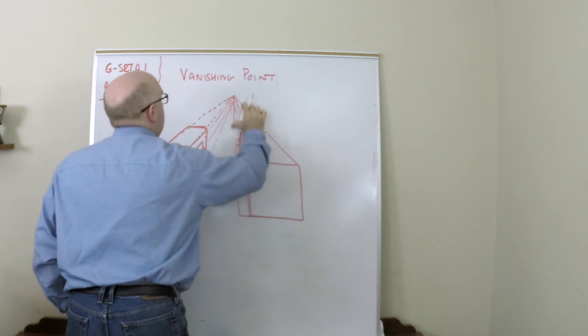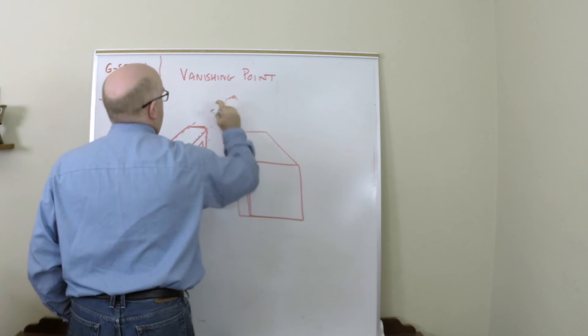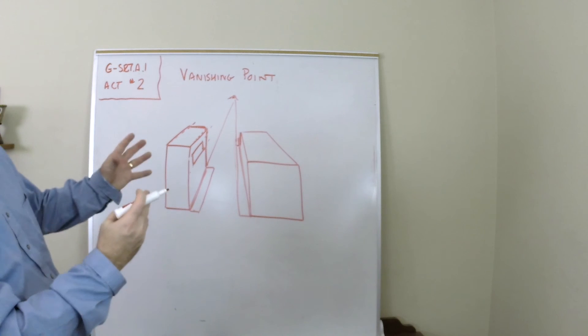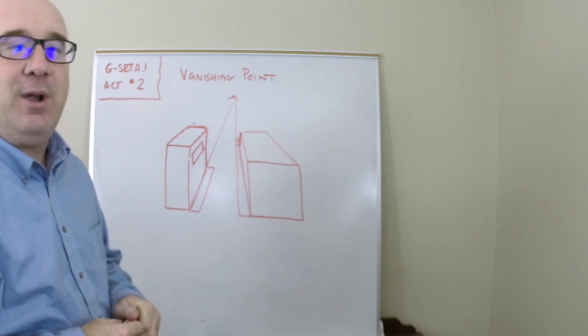And again, at some stage you can take some of these things out. Maybe there's our street that goes off into the distance. But you can start to see that dimensional look of the vanishing point.